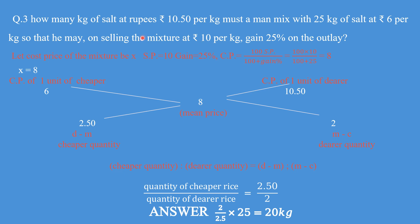Let the cost price of the mixture be X. Selling price is given as 10, gain is given as 25%. Using the formula: cost price equals 100 times SP upon 100 plus gain percent, we get 100 into 10 upon 100 plus 25, which gives the answer 8. So the cost price of the mixture is 8, and this is what you fit into the table. Once you fit this 8, the rest of the question is very easy.